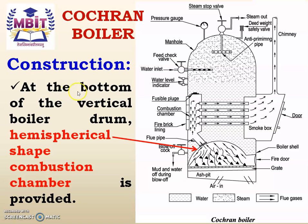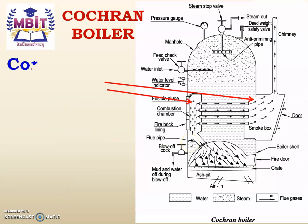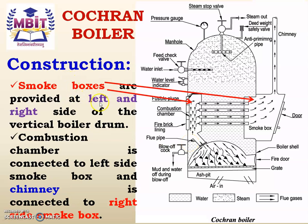Construction: At the bottom of the vertical boiler drum, a hemispherical-shaped combustion chamber is provided. Smoke boxes are provided at the left and right side of the vertical boiler drum. The combustion chamber is connected to the left-hand side smoke box, and the chimney is connected to the right-hand side smoke box.